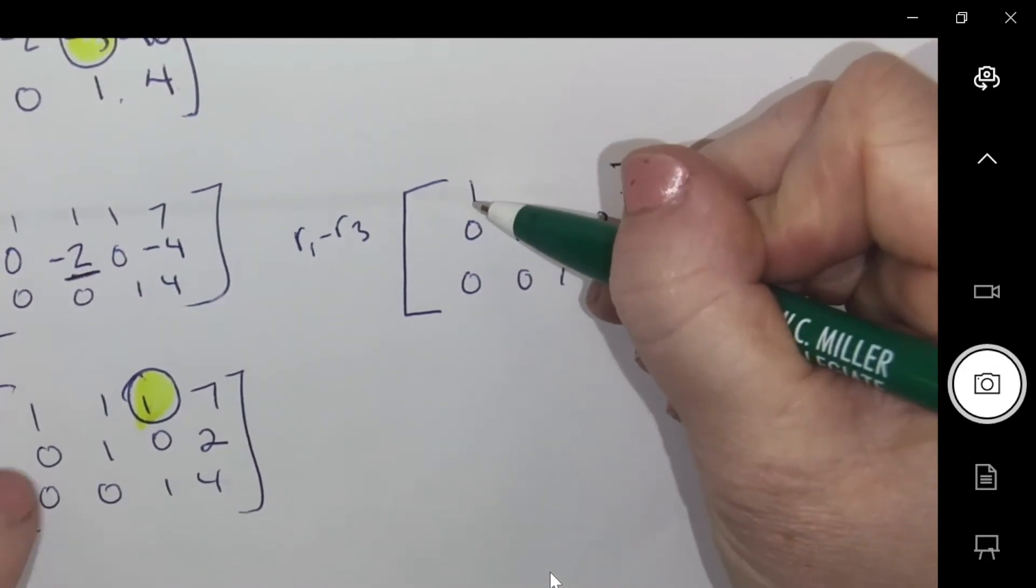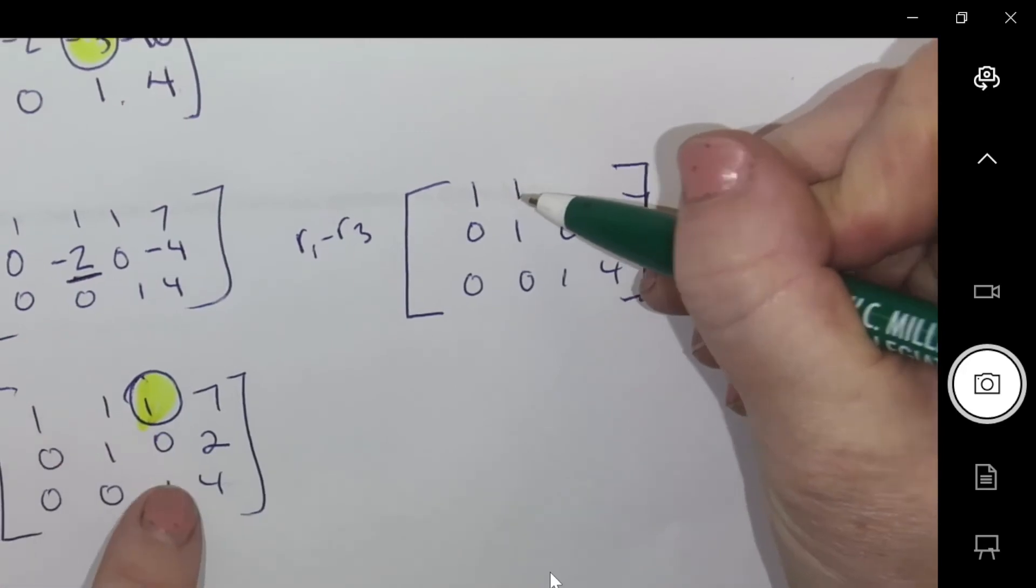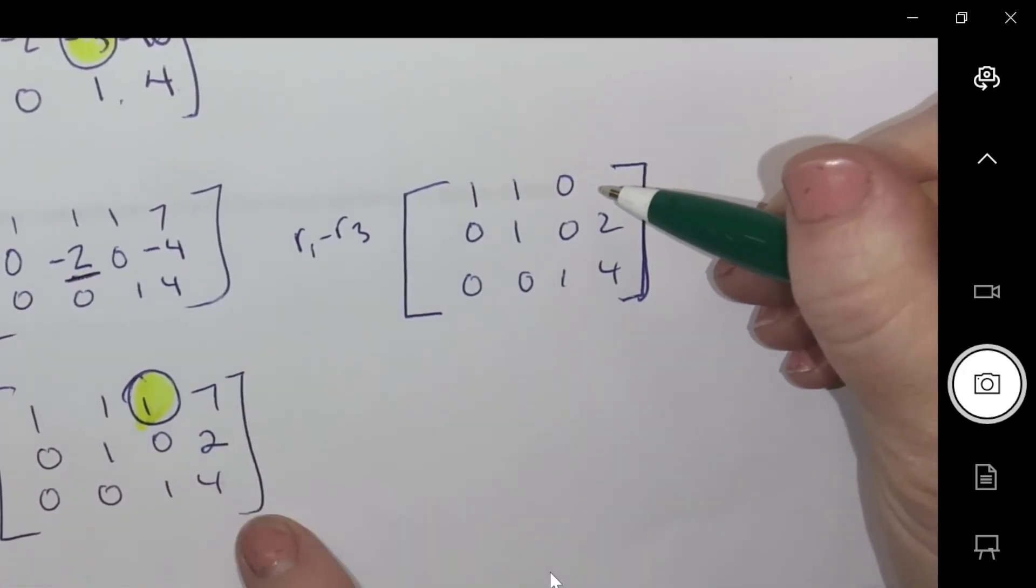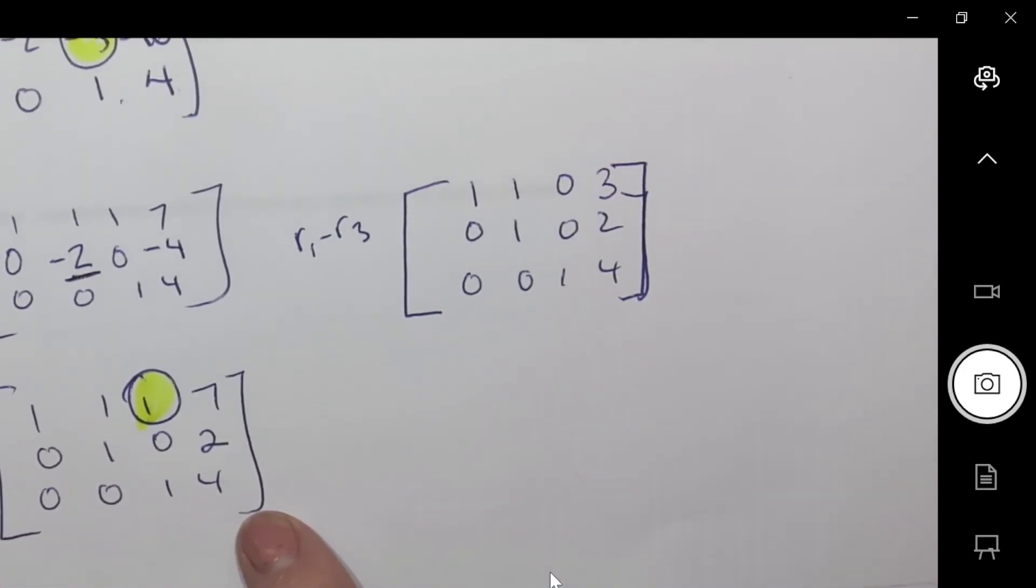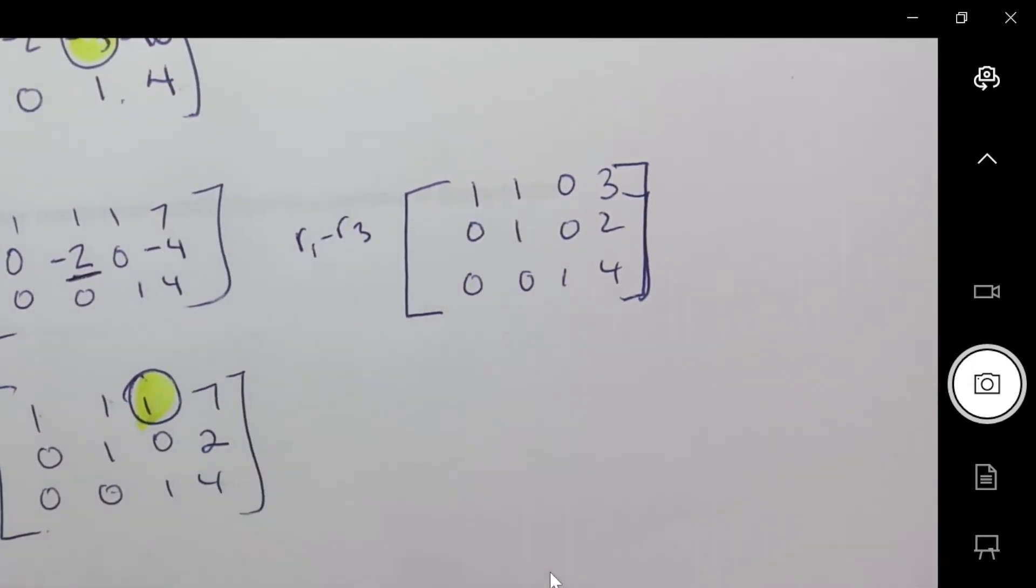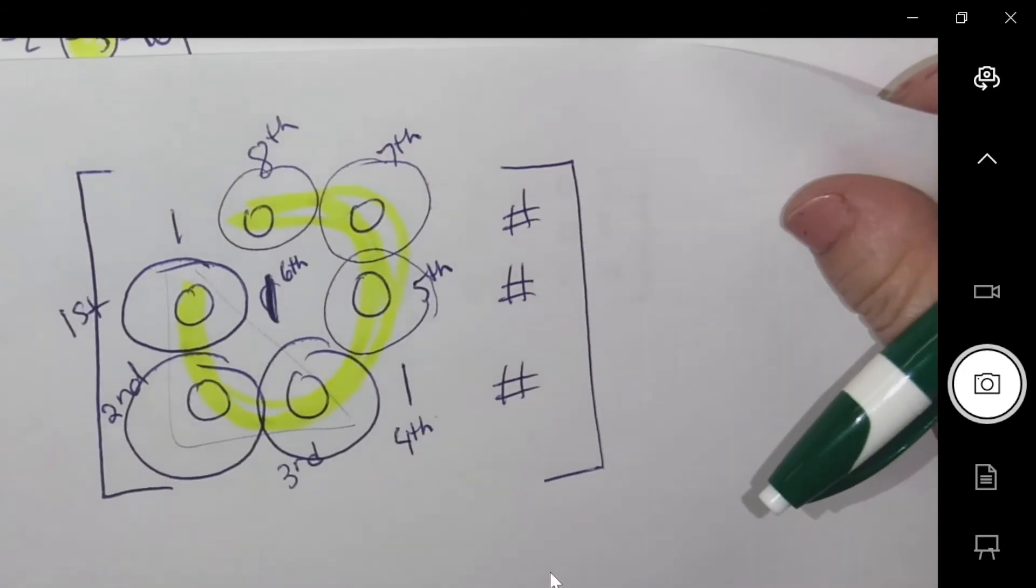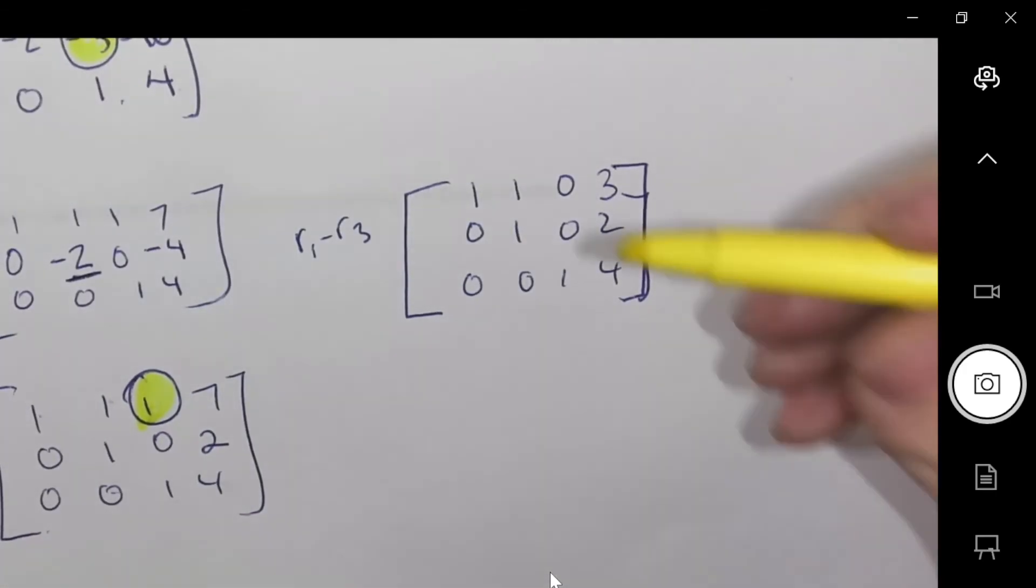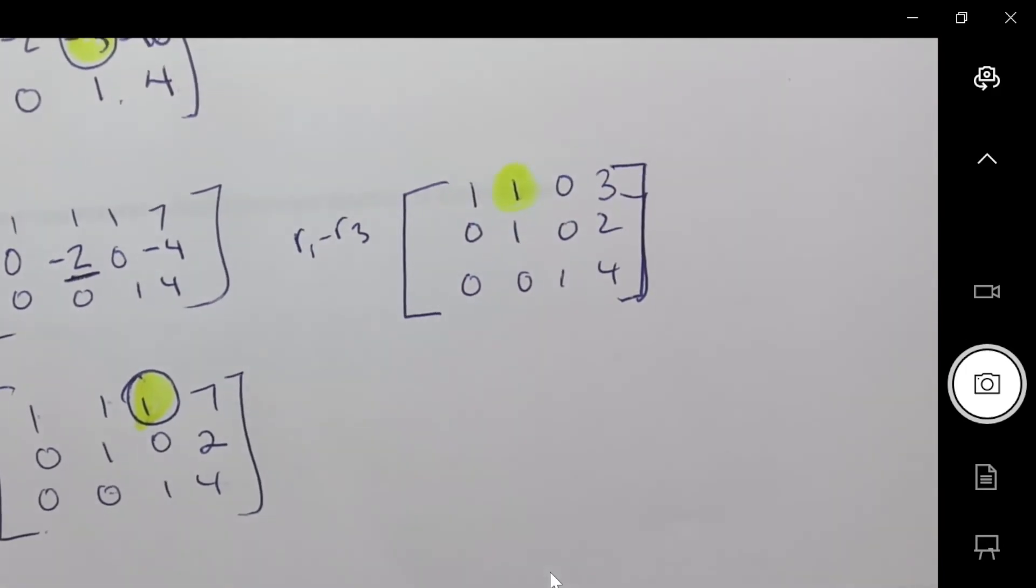Okay. So that makes one, one, zero, three. One minus zero, one minus zero, one minus one, and seven minus four. And the last but not least in our horseshoe is this. I need to zero that out.